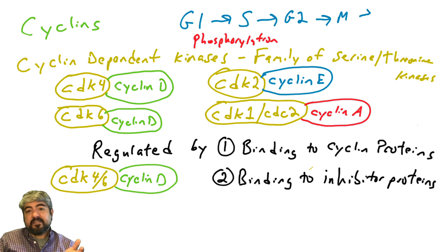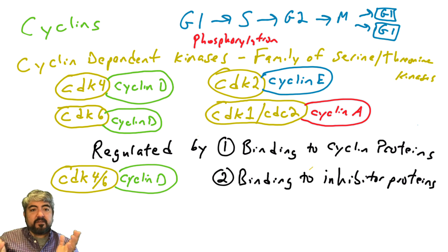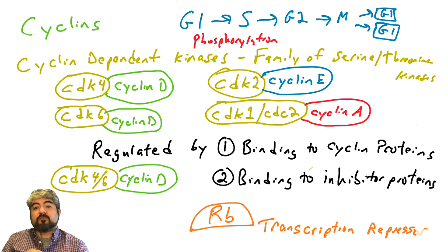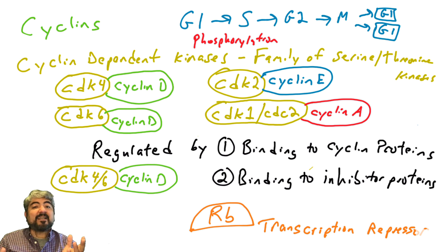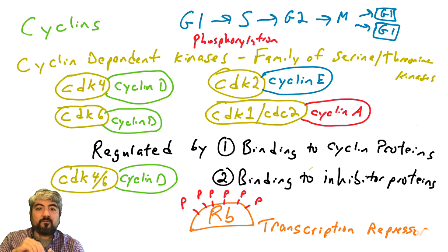What all these CDKs are going to do is phosphorylate their substrates, and phosphorylation regulates movement through the cell cycle. We are going to focus on one substrate called RB, or the retinoblastoma protein. RB is a transcription repressor — it binds promoters and represses transcription, in contrast to transcription factors that transactivate genes. These cyclin-dependent kinases will phosphorylate RB and affect RB's activity, as we'll see in later videos.